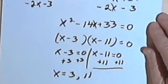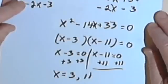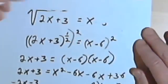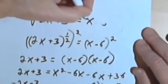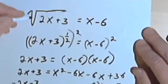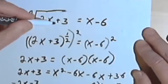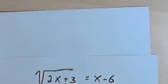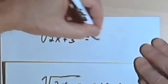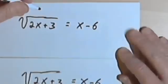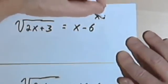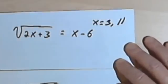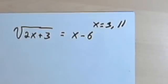So let's go back and check this. Let me just clean this up, because I guess my hand rubbed over it. So this is what we start with. The square root of 2x plus 3 equals x minus 6. And the answers I have are x equals 3 or 11. So let's see if they work.